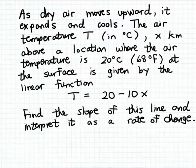at the surface is given by this linear function formula. So the air temperature is going to be that ground temperature 20 minus 10 times the altitude x given in kilometers.